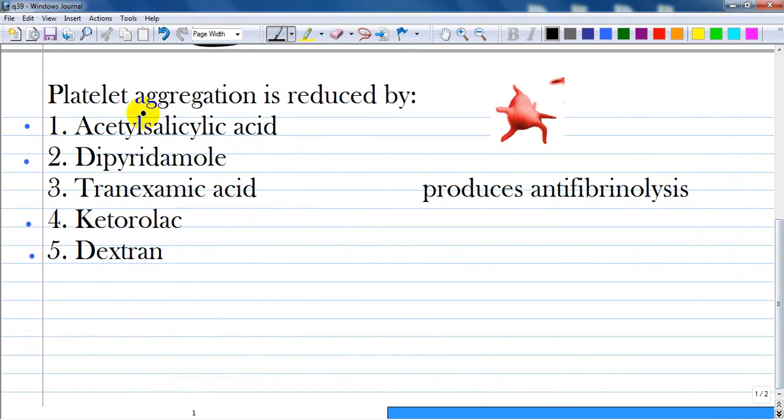So let's read this question. Platelet aggregation is reduced by the following drugs: acetylsalicylic acid, dipyridamole, tranexamic acid, ketorolac, and dextrans.